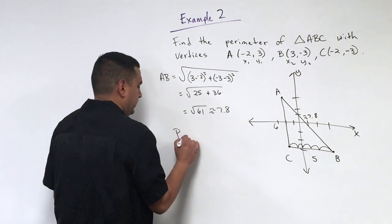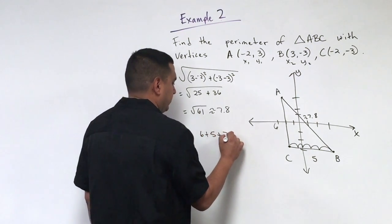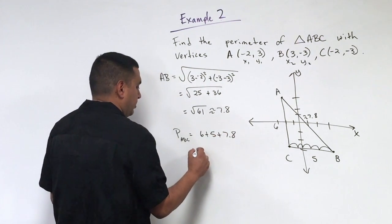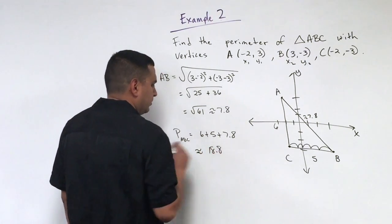So the perimeter of ABC is going to be 6 plus 5 plus 7.8, which comes out to be approximately 18.8 units.